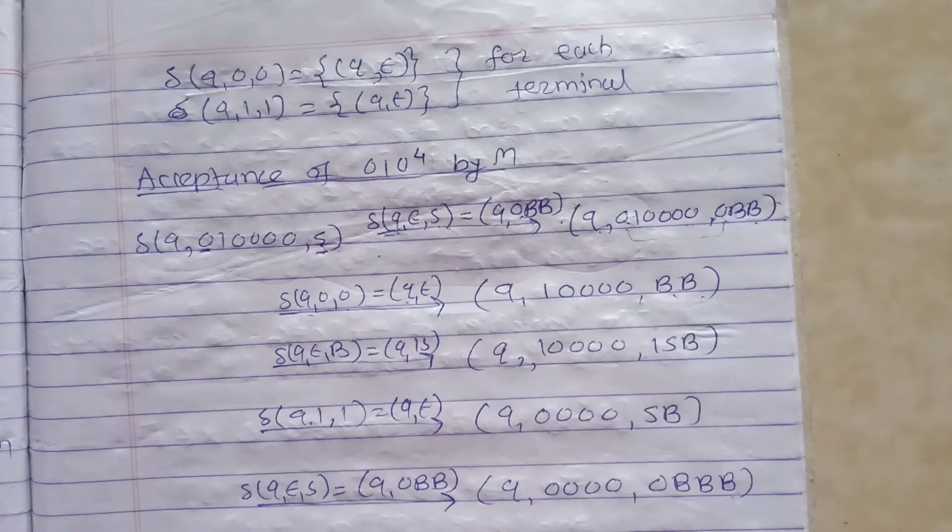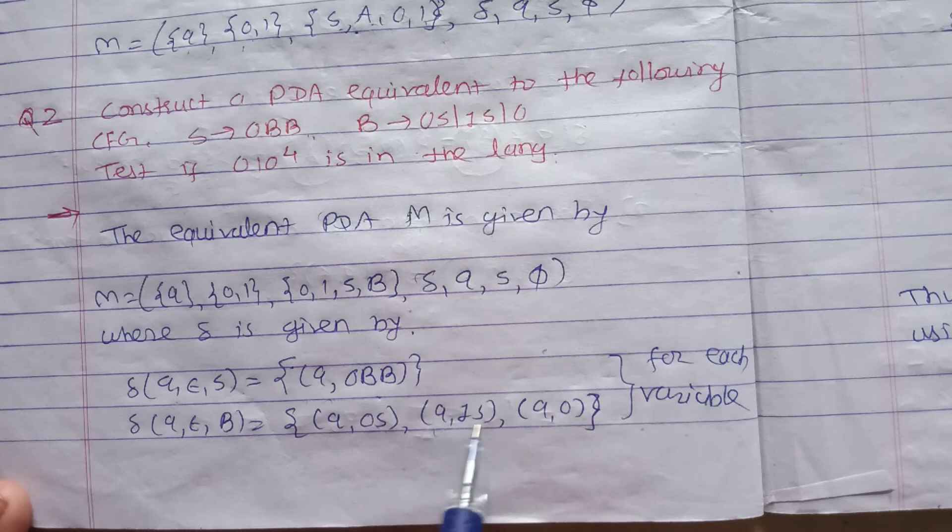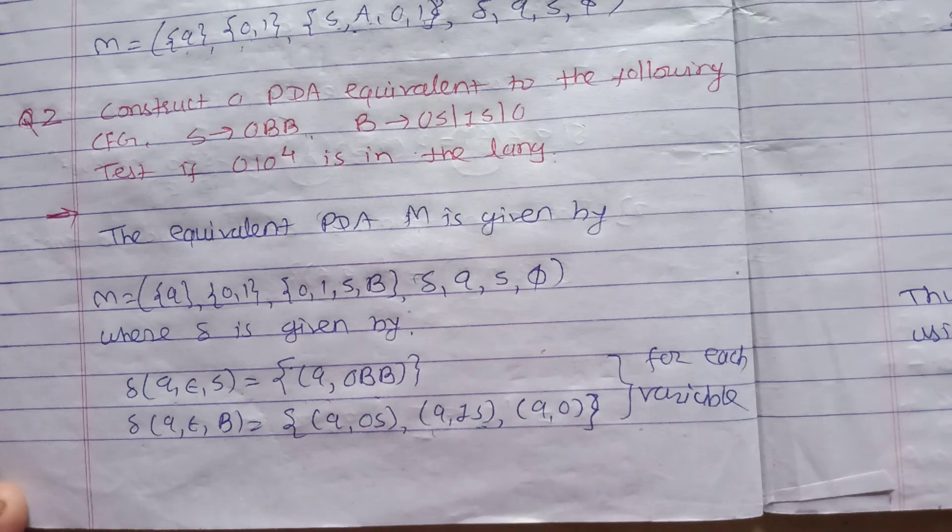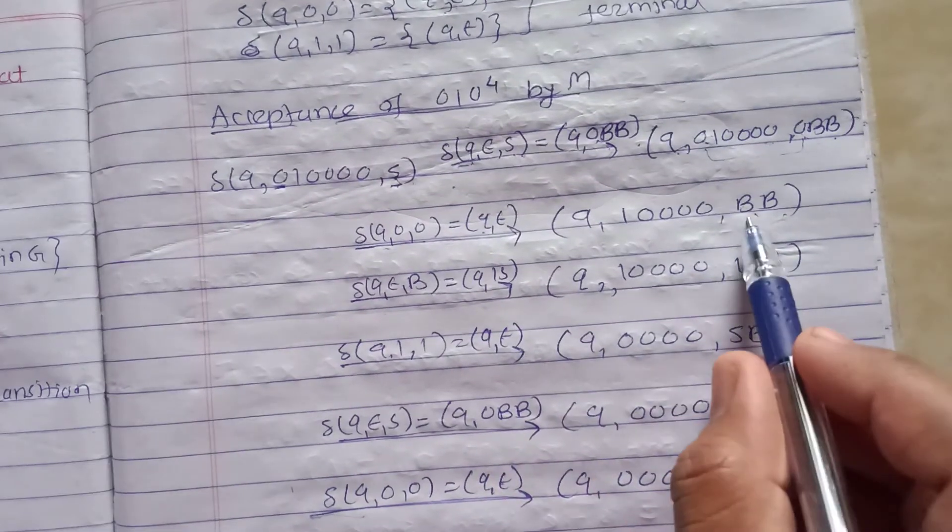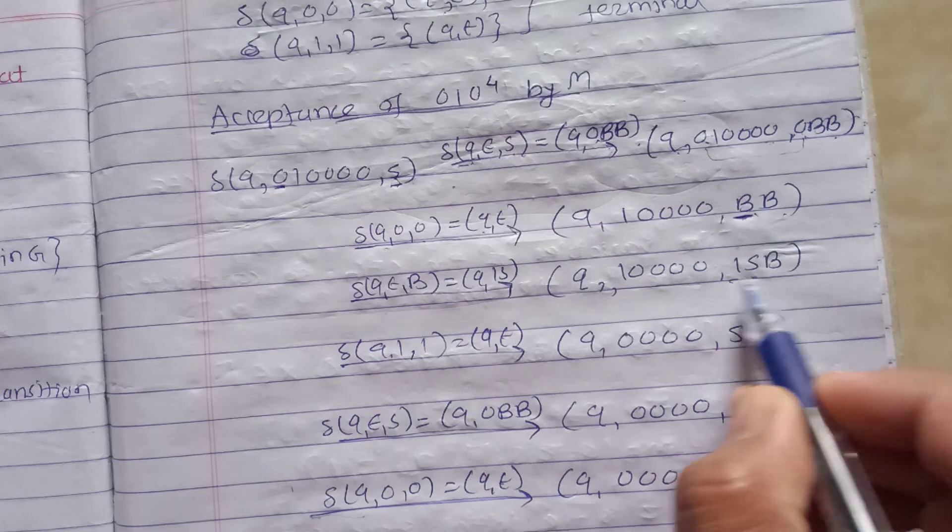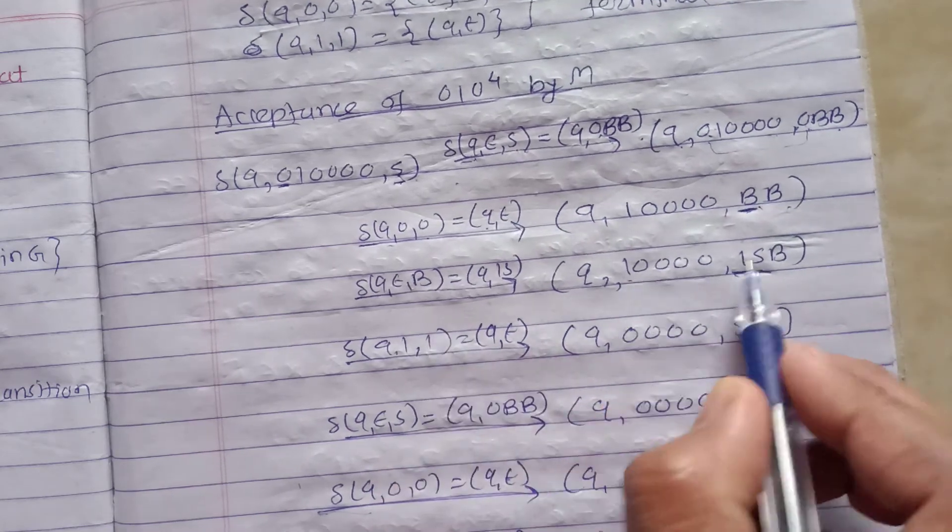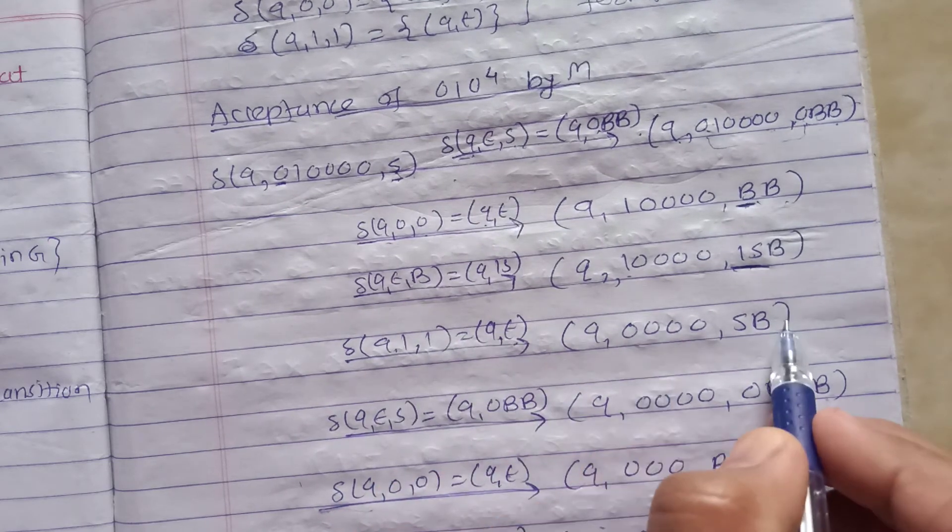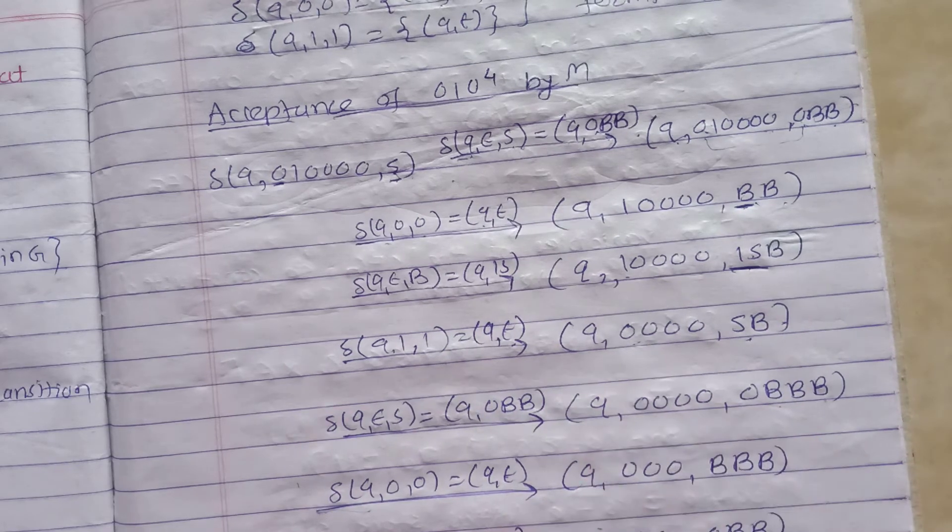Now B's production - which one is present? δ(q, ε, B) equals (q, 1S). Using this transition we produce (q, 1⁴ 0, 1SB). Then δ(q, 1, 1) equals (q, ε), so we get (q, 1³ 0, SB). Again using S's production δ(q, ε, S) equals (q, 0BB), we get (q, 1³ 0, 0BBB).